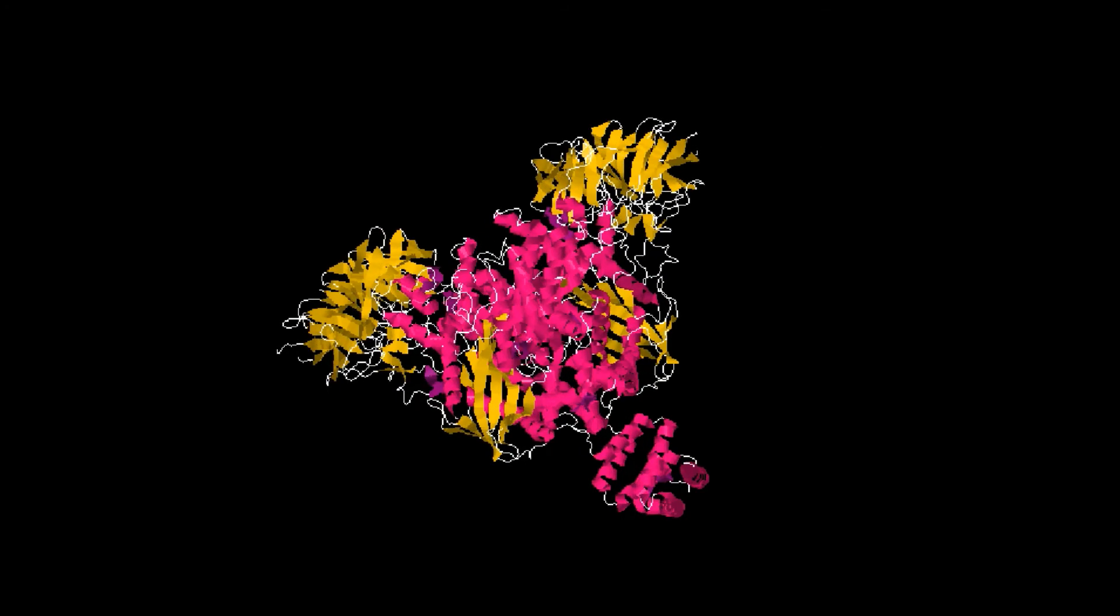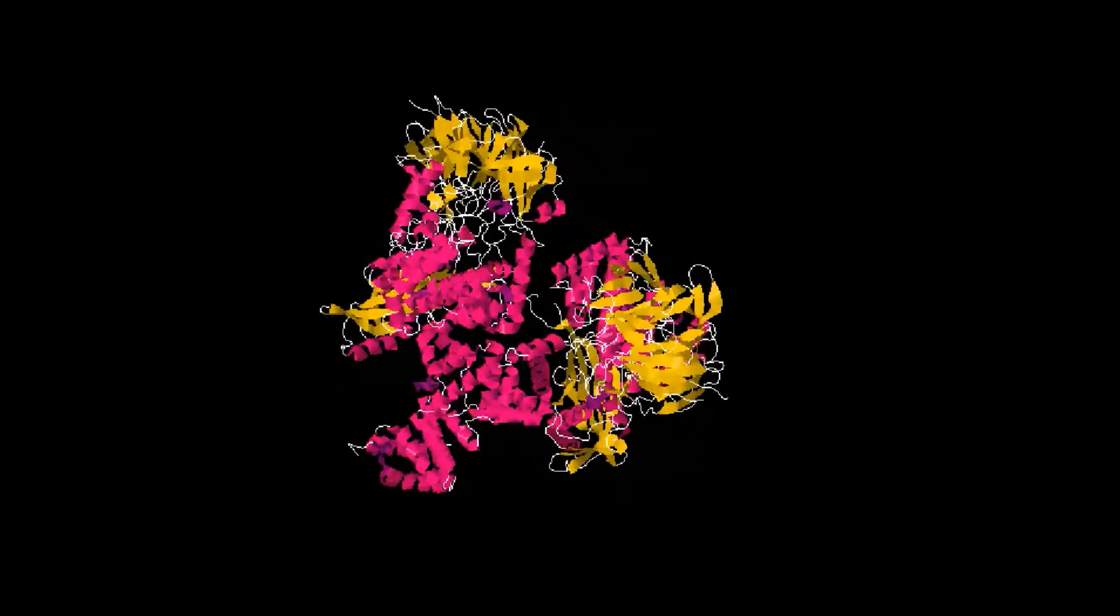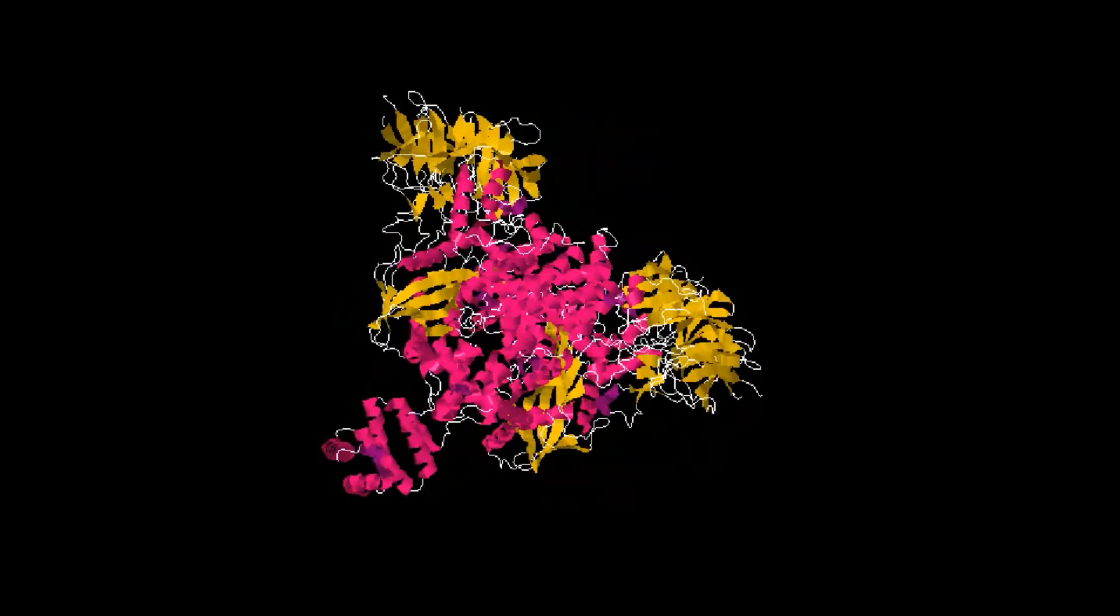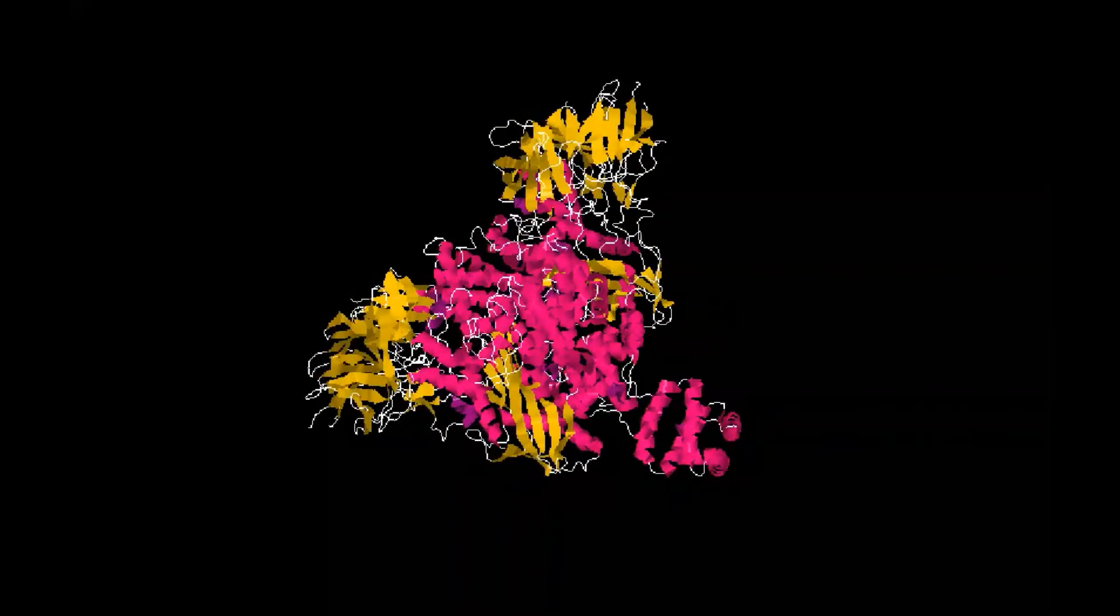Residues 384 to 454 of RAG1 comprise a nonamer binding region that specifically binds the conserved nonamer of the RSS, and the central domain of RAG1 binds specifically to the RSS heptamer.